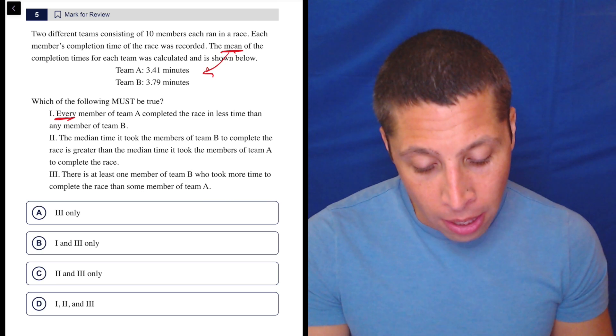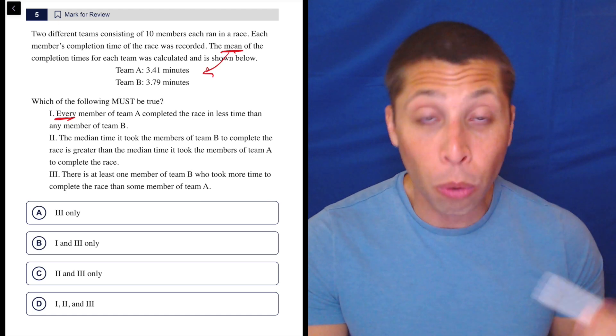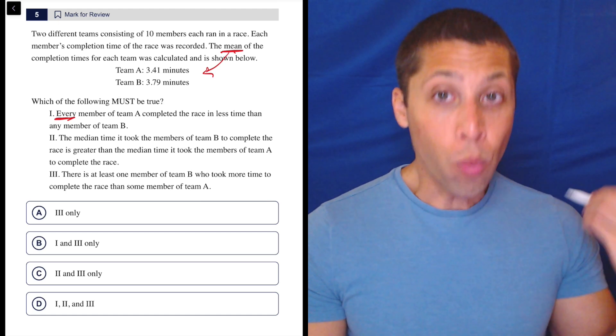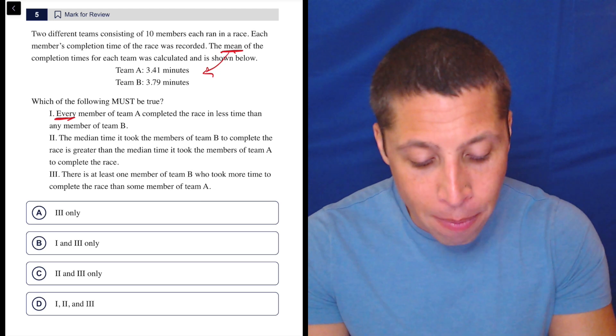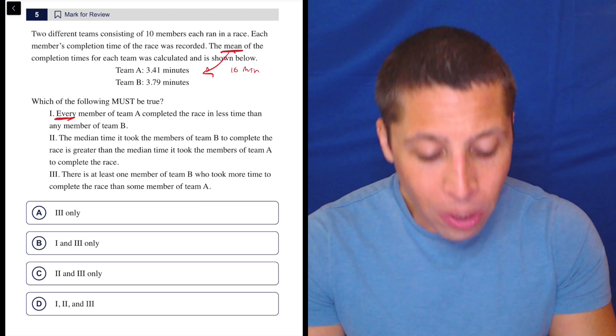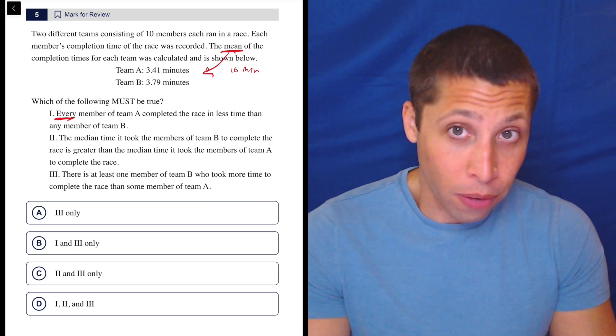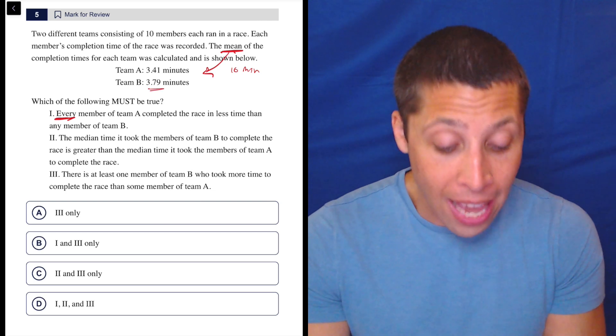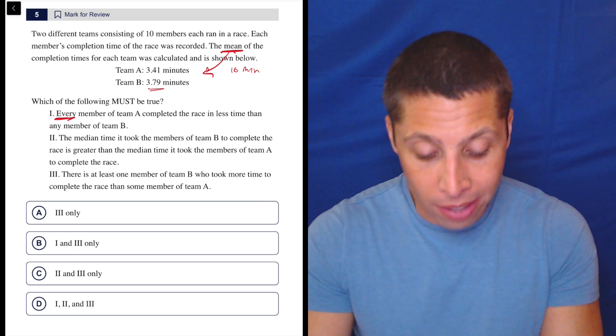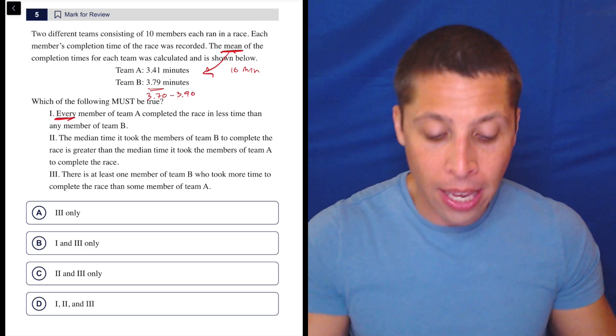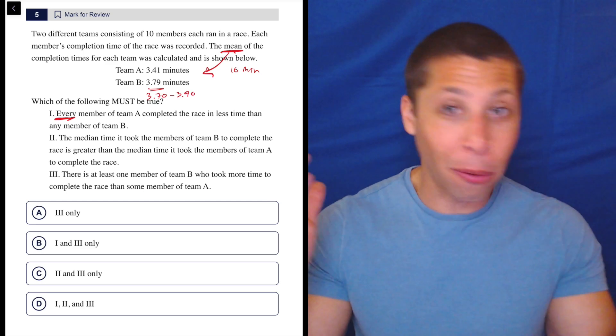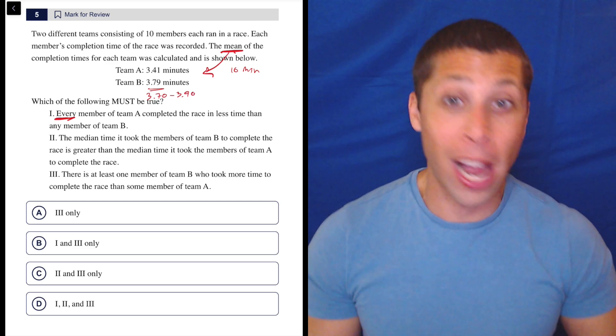So it's possible that even though Team A was as a whole faster, there was one really slow person who had like a 10-minute time. We wouldn't know that, but it could have happened. It also could have been the case that everyone in Team B was within 3.7 to 3.9. Everyone was really consistent. They didn't have anyone dragging them down.